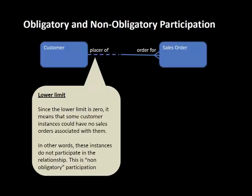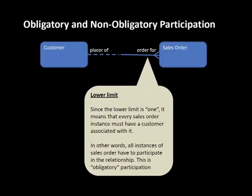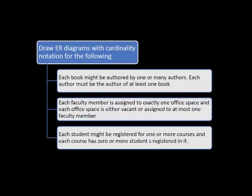The lower limit determines whether that entity type must participate or may not participate. That is why the dashed line on the side of that entity indicates non-obligatory participation. It's not new notation, just terminology. Sales orders have obligatory participation because every single sales order must have a customer — every sales order is obliged to participate, indicated by a solid line. So that's just another interpretation of the lower limit.